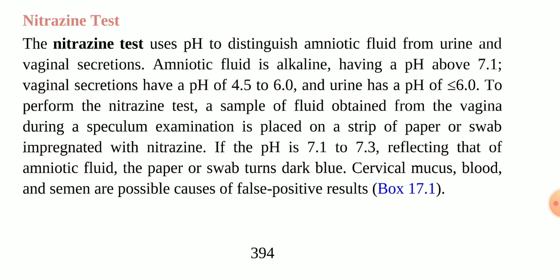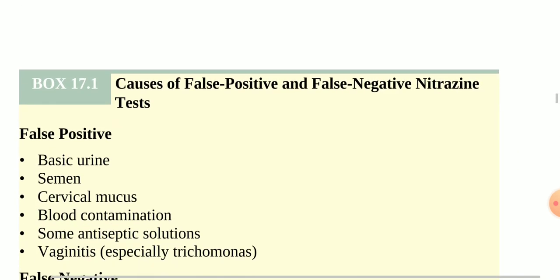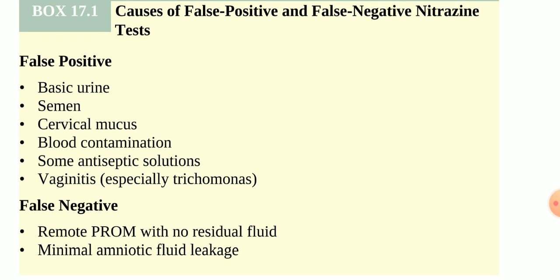However, if there is a rupture of the membrane and fluid is leaking into the sample taken from the vagina or cervix, and the pH is between 7.1 and 7.3 — an alkaline pH — then we can conclude there is leakage or rupture of the amniotic membrane.